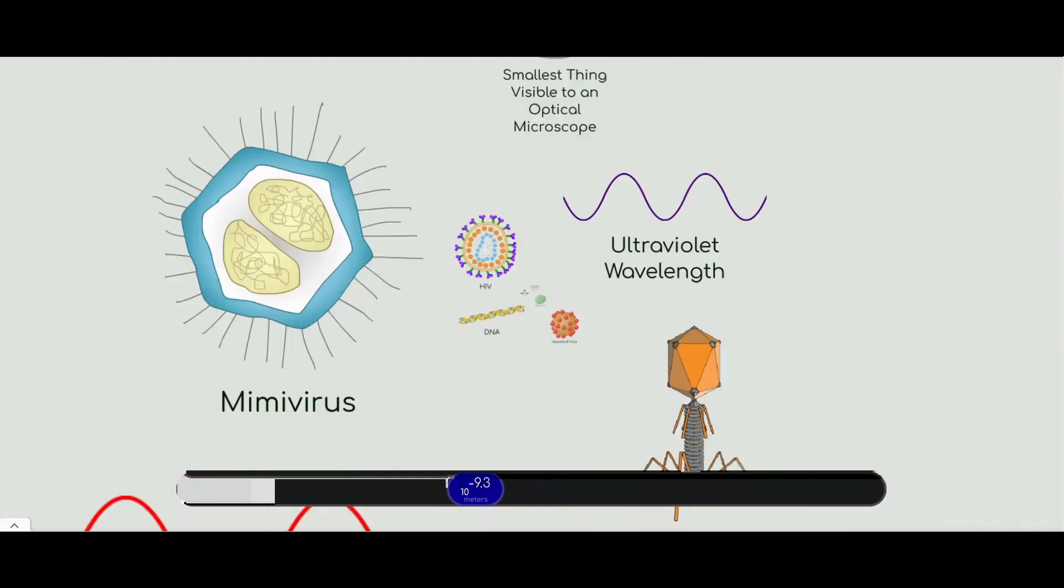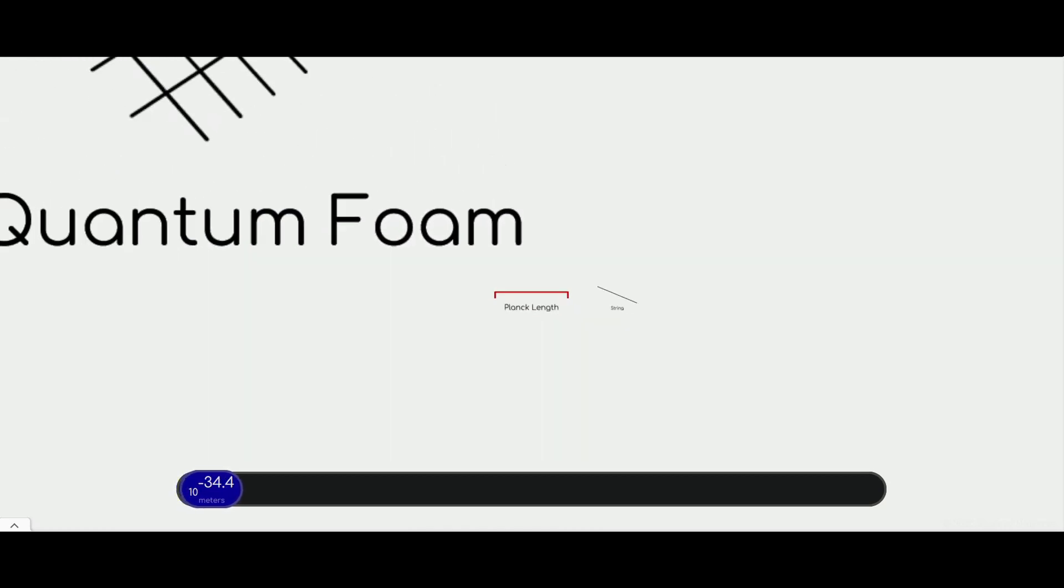Welcome to the scale of the universe. Here we're going to be doing something really cool. The smallest thing ever thought of. Max Karl Ernst Ludwig Planck. He's a German theoretical physicist who described what he thought was the smallest measurement that could ever be taken.